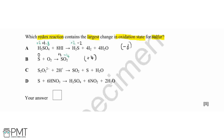For equation C, we've got three lots of minus two for the oxygen, giving minus six. But we need to have a minus two charge overall. Therefore, the sulfurs need to add up to plus four, so individually the sulfur will have an oxidation state of plus two.